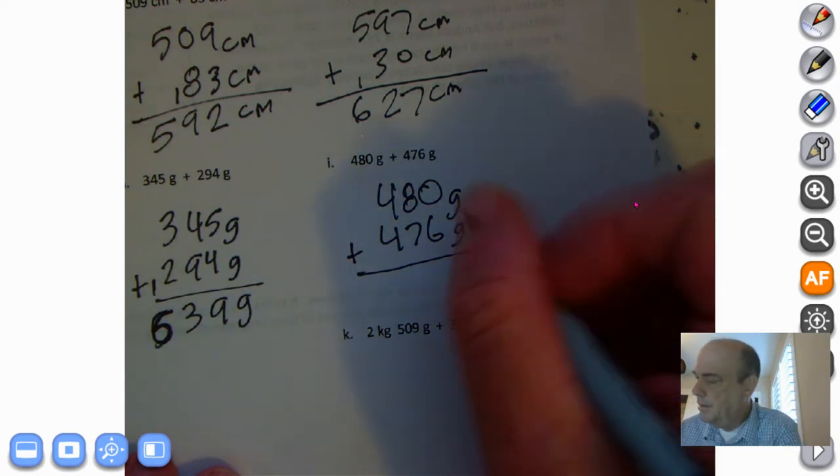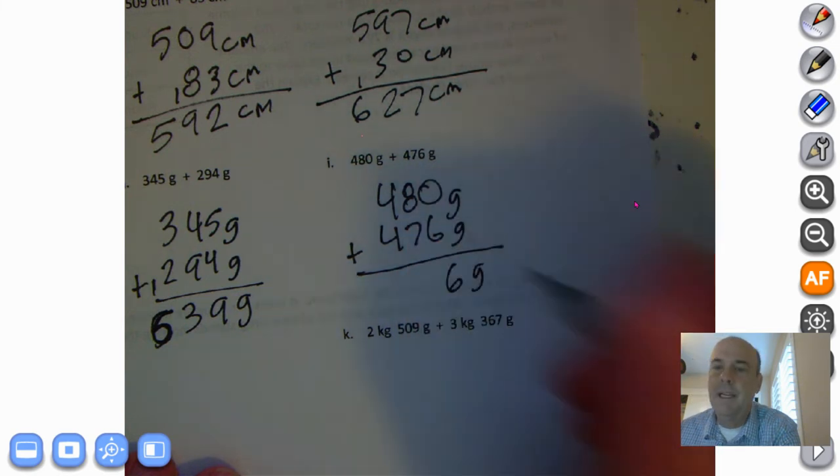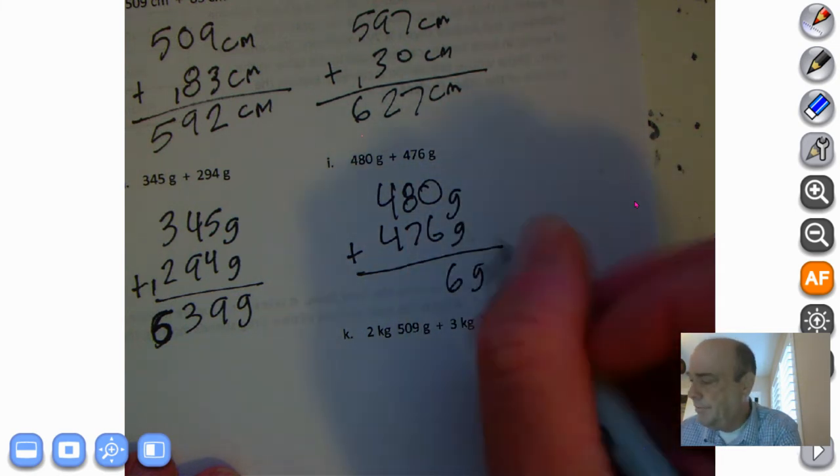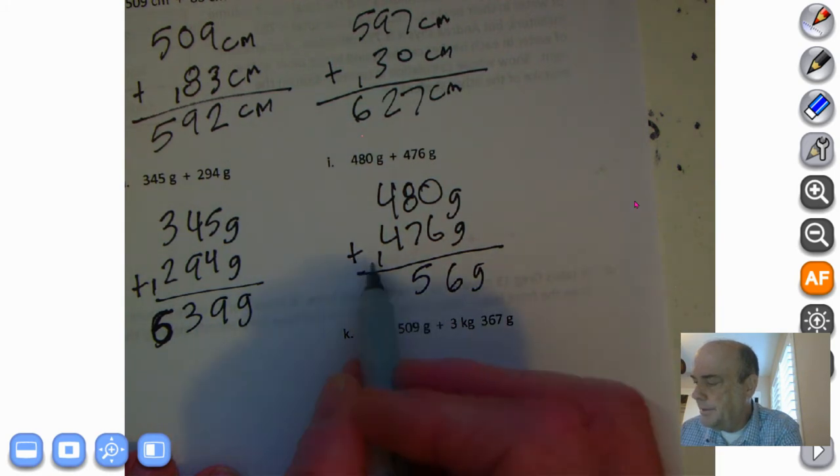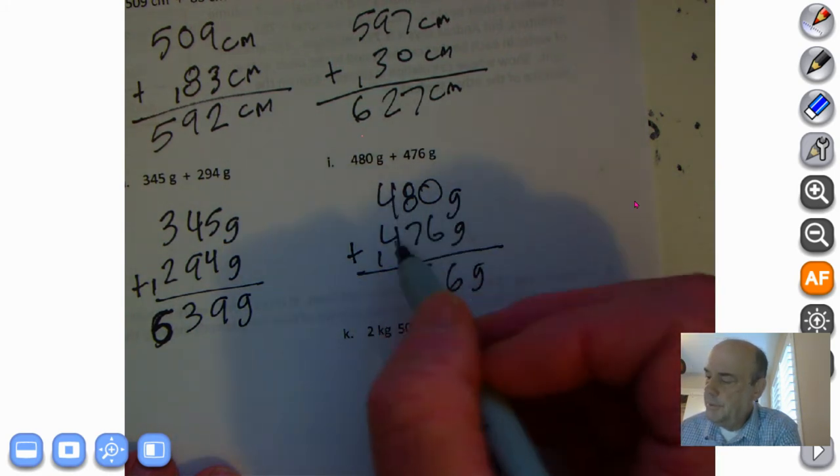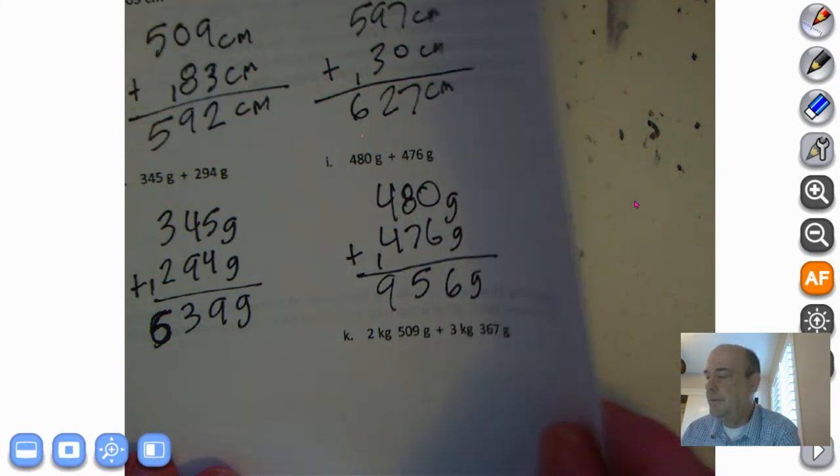Welcome back. Bring down the grams. Zero plus six is six. Eight plus seven is fifteen. This time I don't forget to put my hundreds there. It's actually 15 tens, one hundred five tens. Four hundreds plus four hundreds plus one hundred. So that comes to 900. So it's 956 grams.